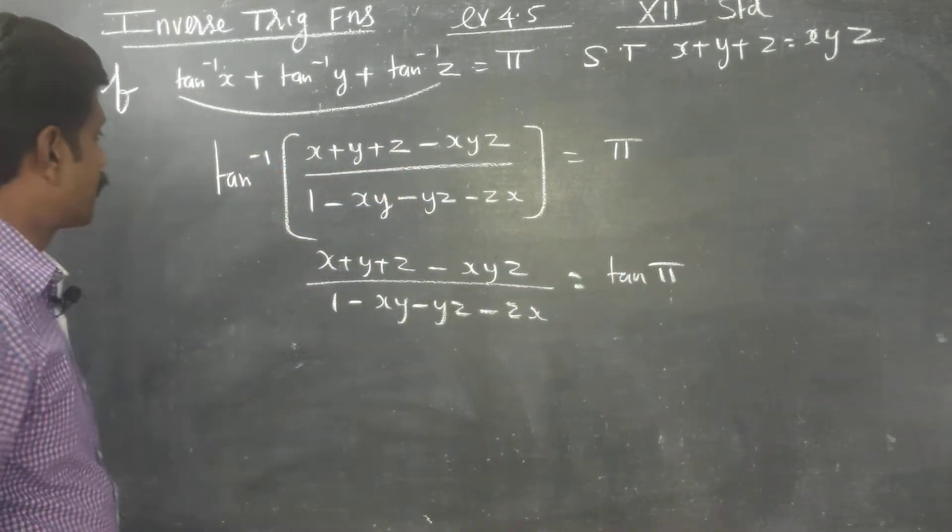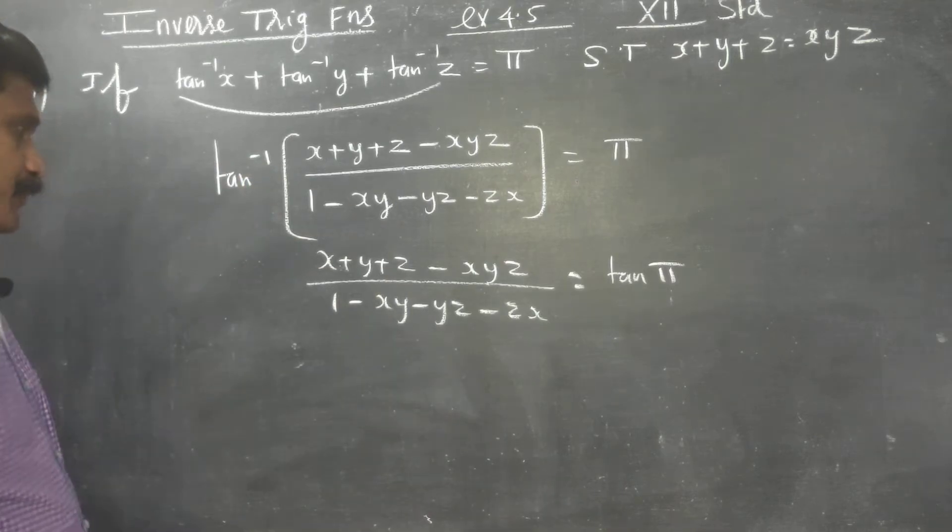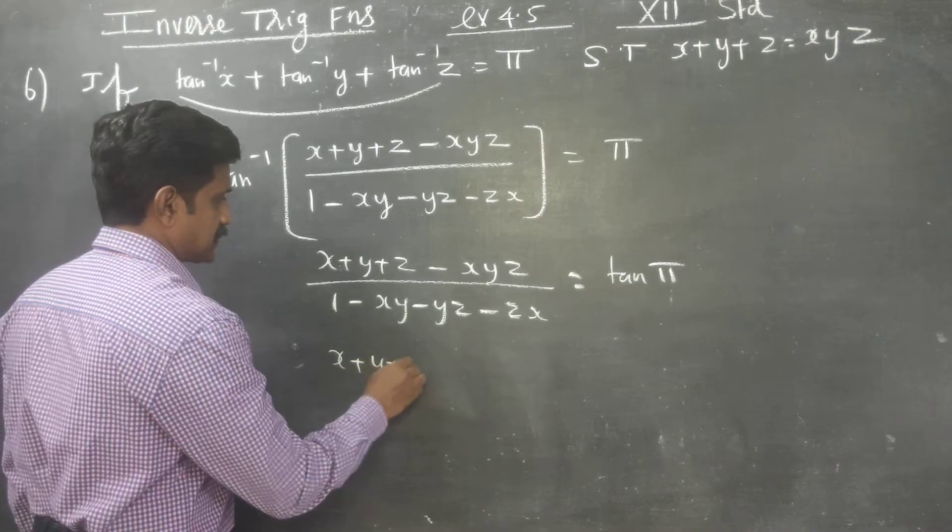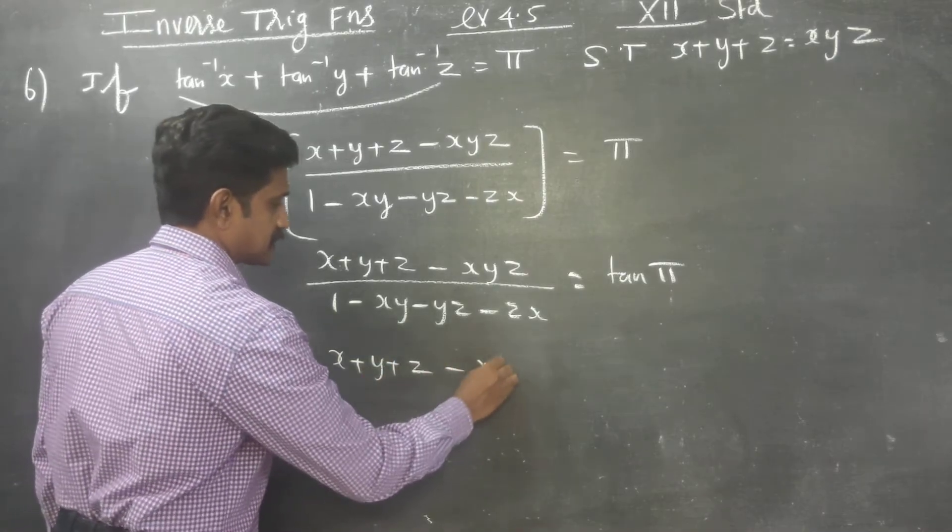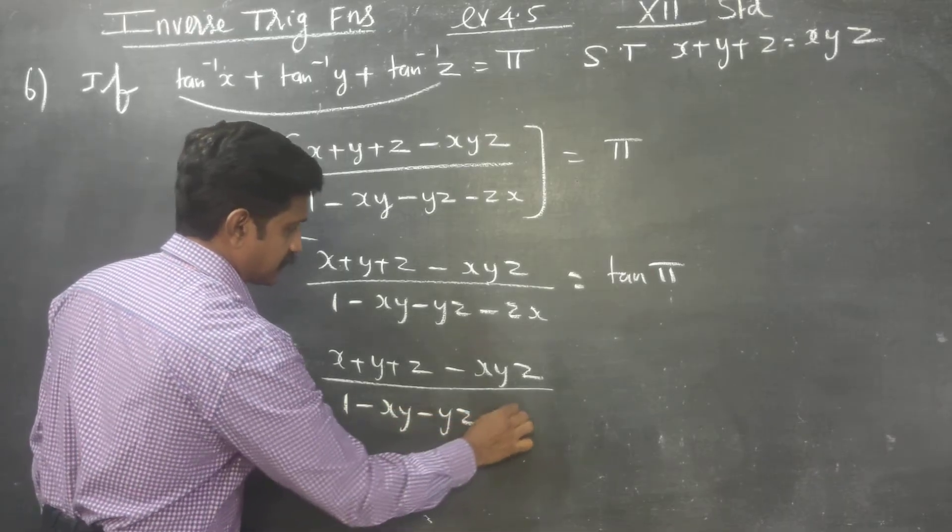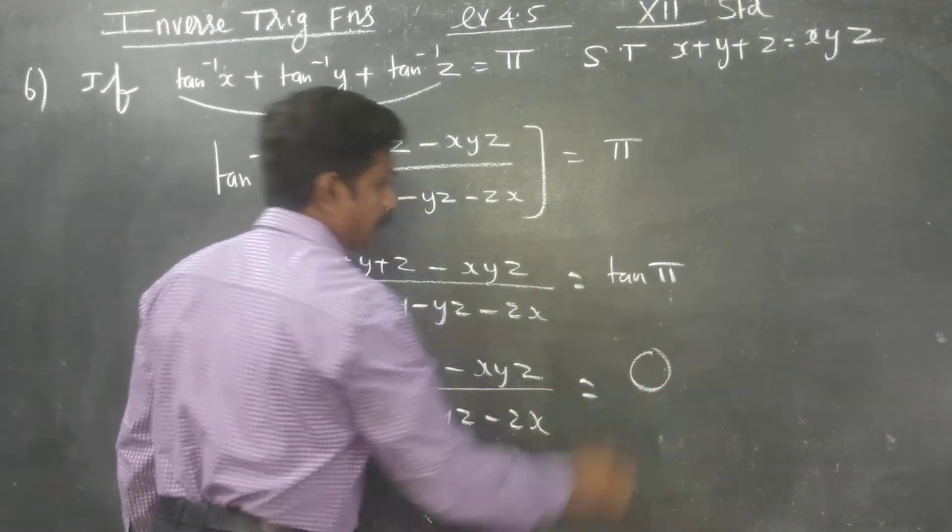On the other side, tan pi is equal to x plus y plus z minus xyz divided by 1 minus xy minus yz minus zx. What is tan pi?